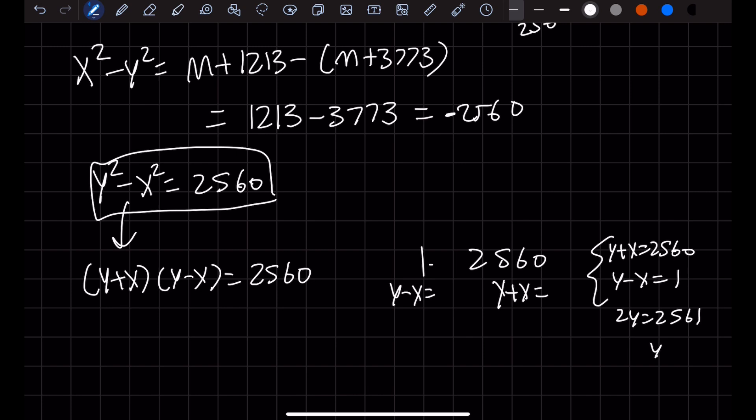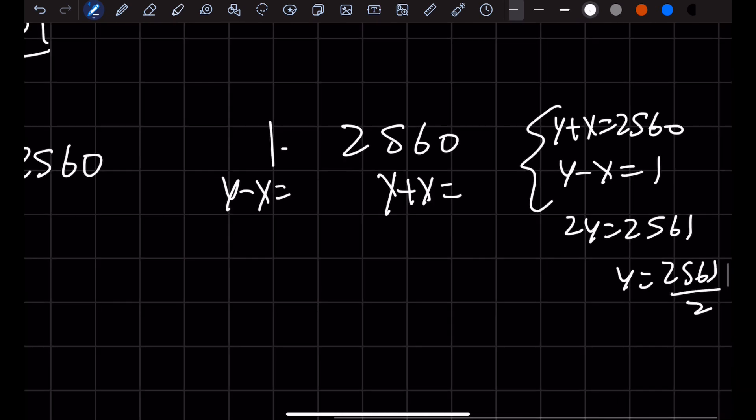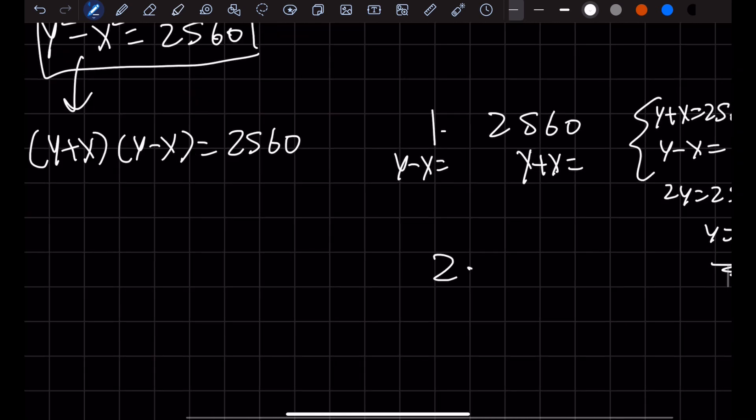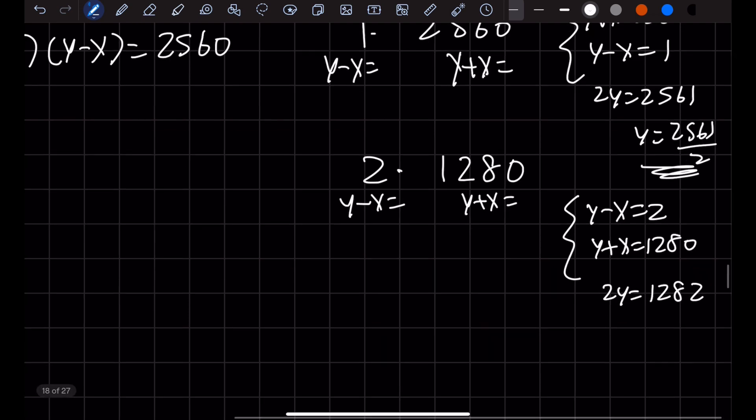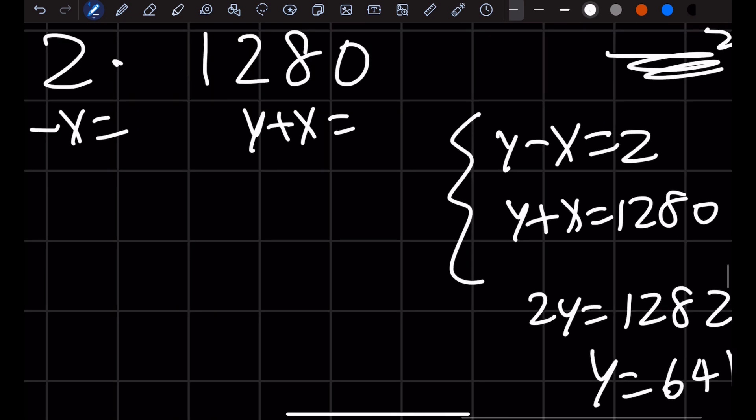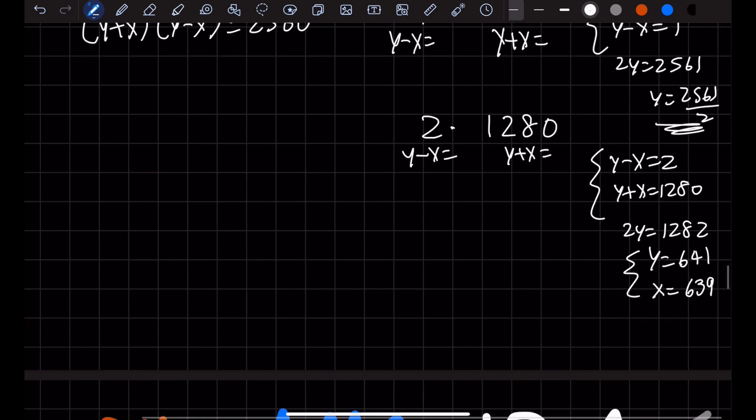That gives 2y equals 2,561, so y is some really bad number. These should be perfect squares of integers probably, so this won't work. Let's try 2 times 1,280. That would be y minus x equals 2, and y plus x equals 1,280.